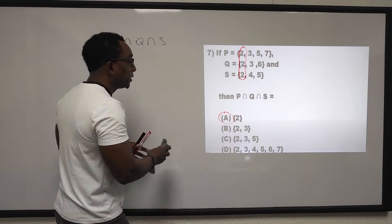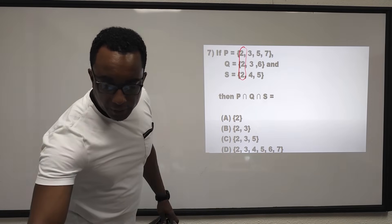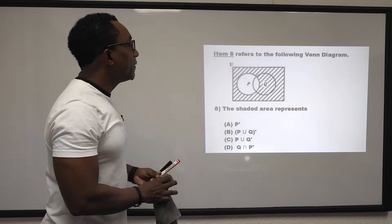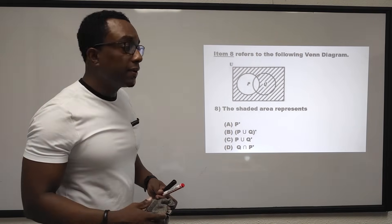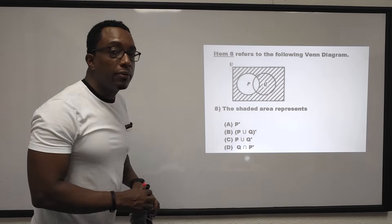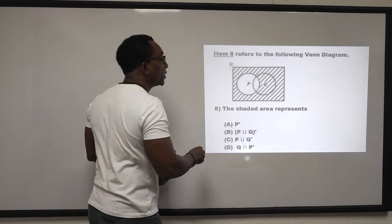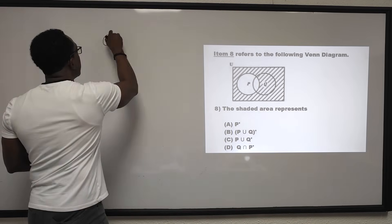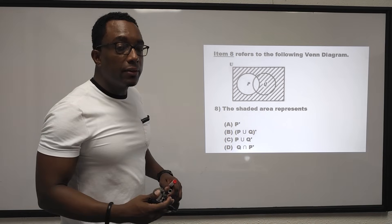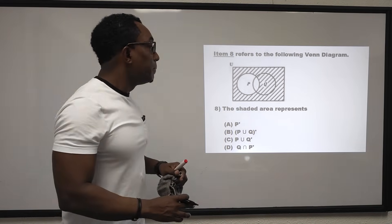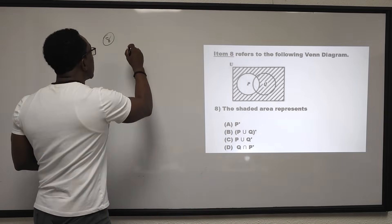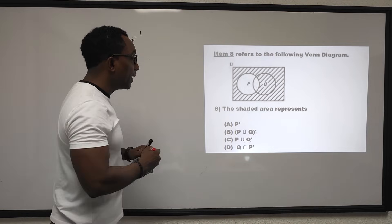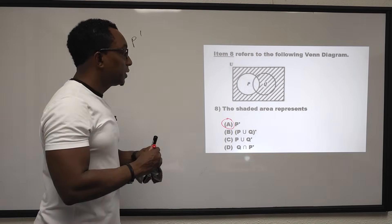Question 8 refers to a Venn diagram. The shaded area represents the region outside of set P. The region outside of set P is known as P complement, denoted with a stroke at the top right of P. The answer is A.